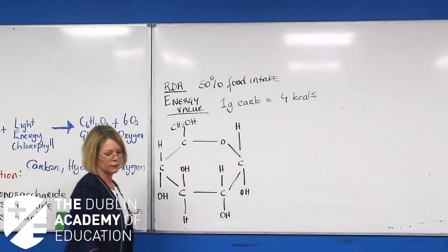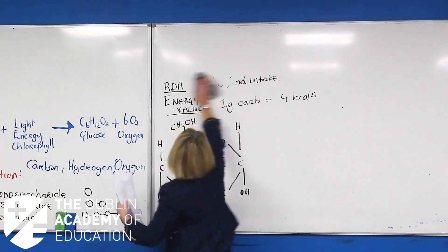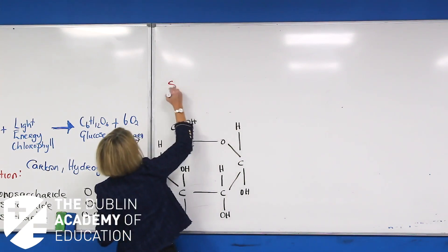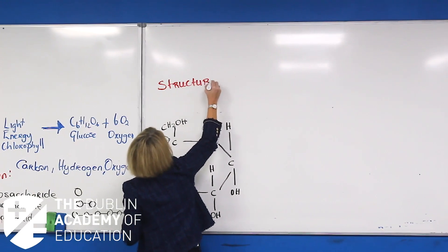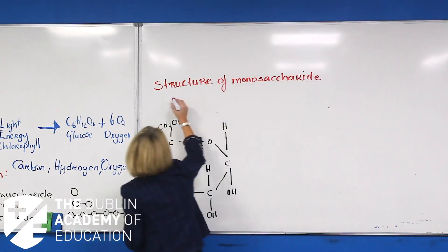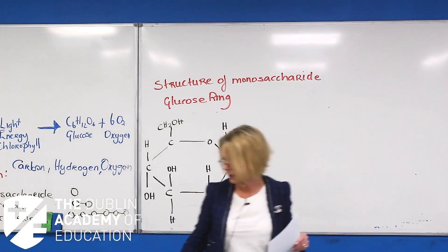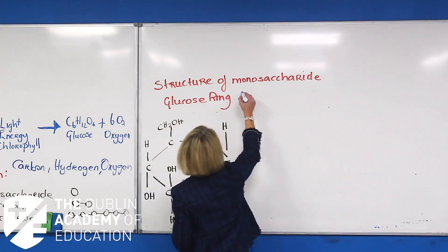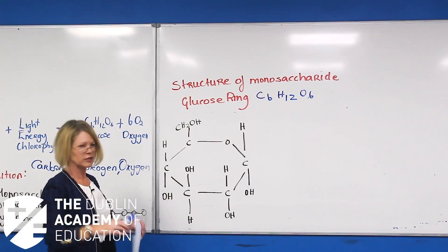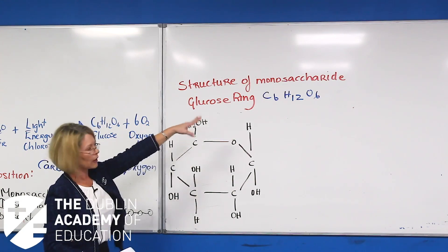Now, looking at what we call the glucose ring — this is the structure of a monosaccharide, also known as the glucose ring. The formula for the glucose ring is C6H12O6. I would ask you to pause the video and copy down that diagram — you need to practice drawing it. It will be a requirement if carbohydrates come up. To show where we get the formula from, let's start counting.